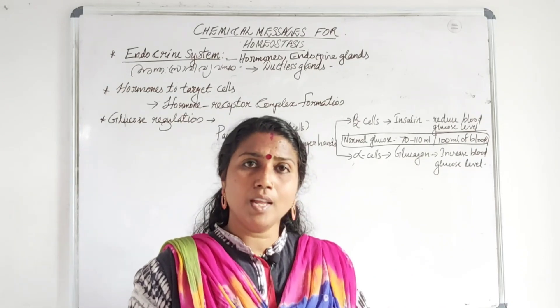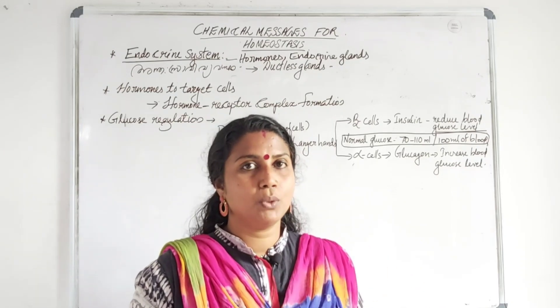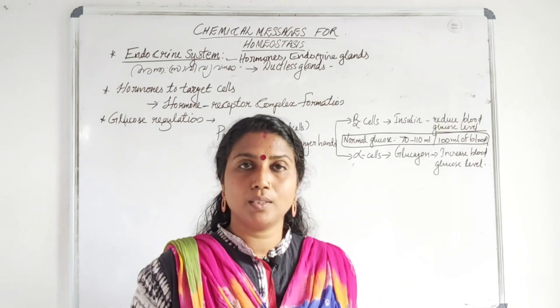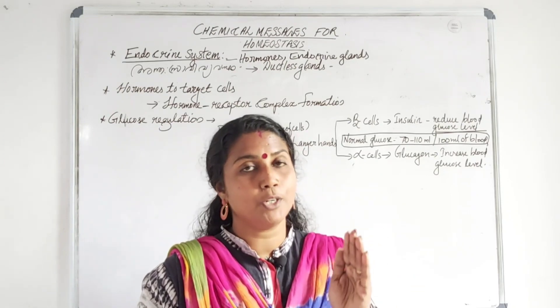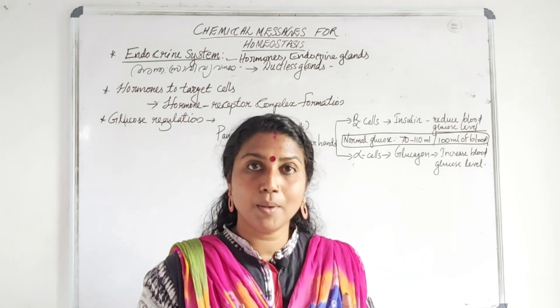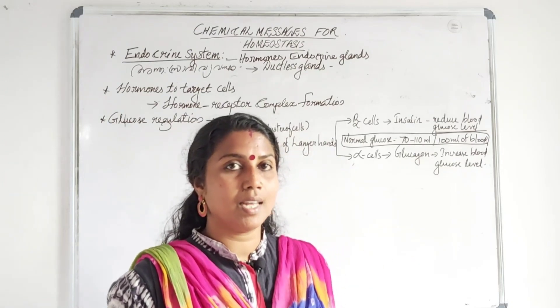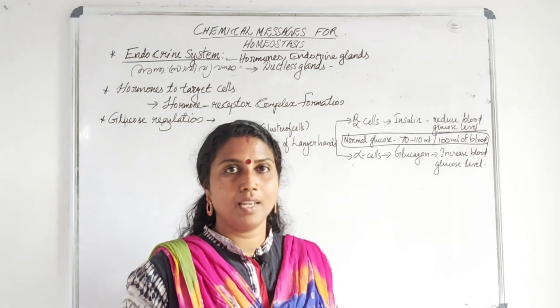So there are no ducts in the endocrine system. Endocrine glands are also known by another name — Ductless Glands, or Nali Rakhitha.